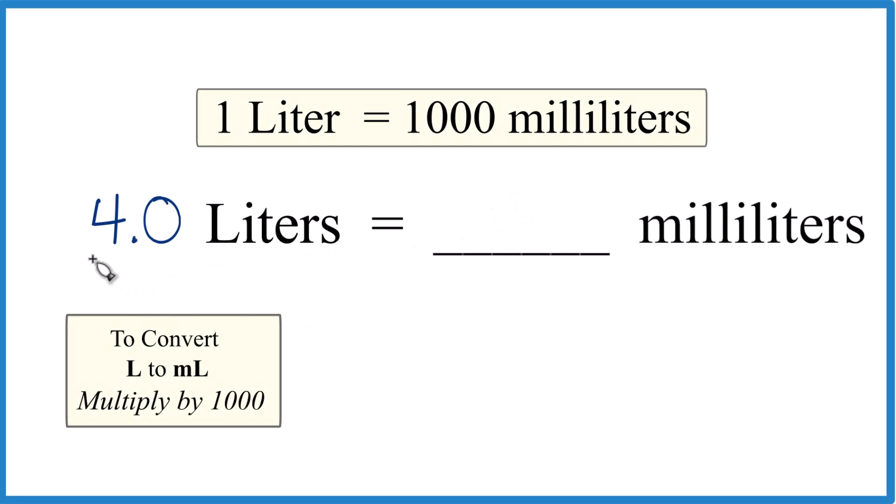Okay, let's convert 4 liters to milliliters. You need to know that 1 liter equals 1,000 milliliters. That's our conversion factor.